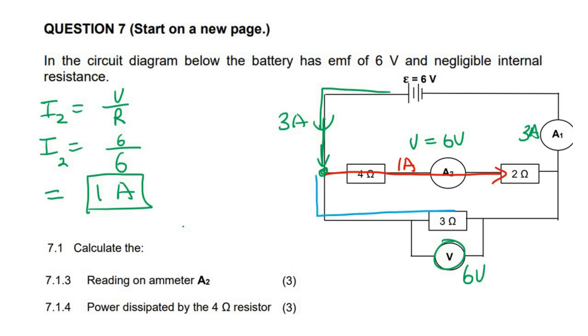And so that then means 2 amps would go this way, if they ever ask us that. 2 amps would go that way. And then the 2 amps and the 1 amp would combine again to become 3 amps over there. So the answer is 1 amp.